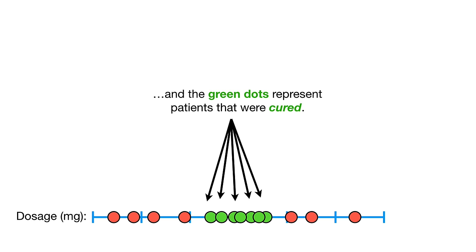Another very commonly used kernel is the radial kernel, also known as the radial basis function kernel. The radial kernel finds support vector classifiers in infinite dimensions. When using it on a new observation, the radial kernel behaves like a weighted nearest neighbor model — the closest observations have a lot of influence on how we classify the new observation, and observations that are further away have relatively little influence. So the radial kernel uses the classification of the nearest observations for the new observation.